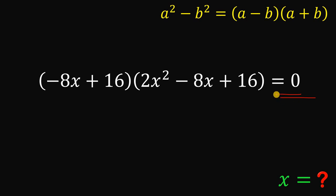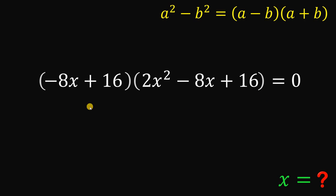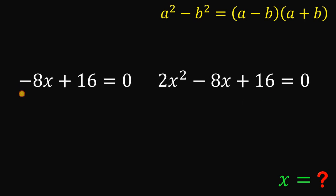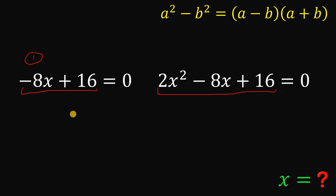our equation becomes negative 8x plus 16 multiplied by the quantity 2x squared minus 8x plus 16 equals 0. Since it equals 0, at least one factor must equal 0 by the zero product property. So we have: negative 8x plus 16 equals 0, or 2x squared minus 8x plus 16 equals 0. Let's focus on the first equation and solve for x.